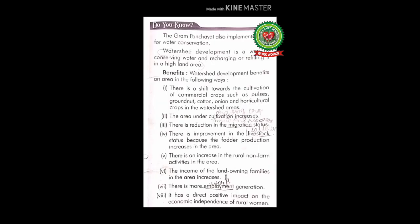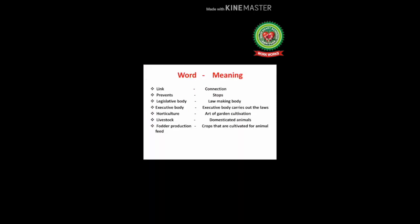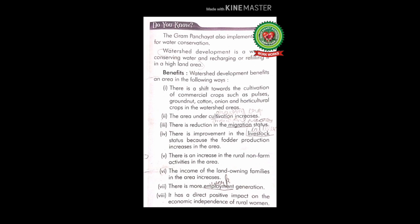Number two: the area under cultivation increases. Number three: there is reduction in migration — migration means moving from one place to another. Number four: there is improvement in livestock status because fodder production increases in the area. Livestock means domesticated animals and fodder production means crops cultivated for animal feed. So due to watershed development, there is improvement in the status of animals because feed production increases for the animals.